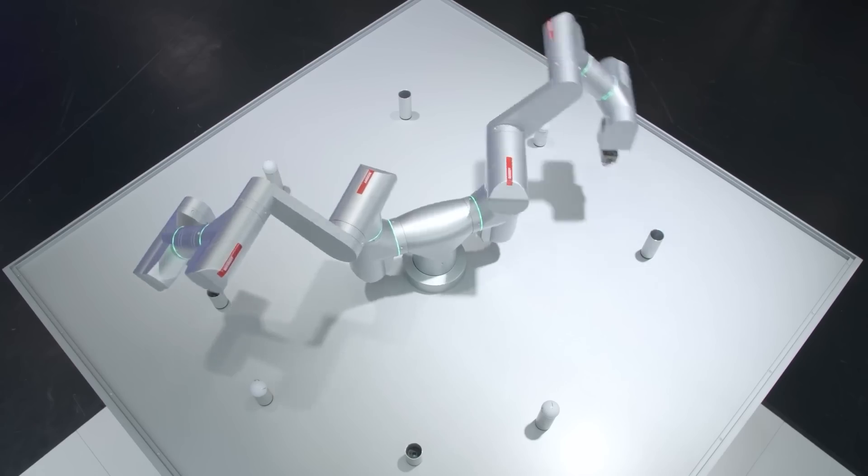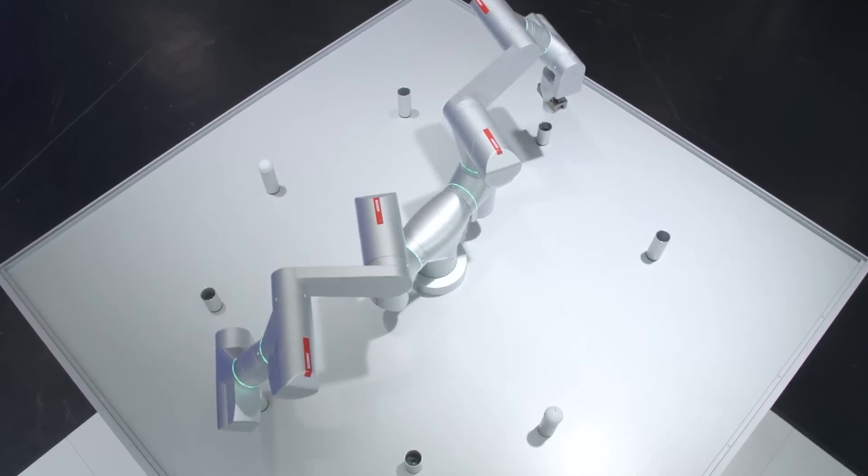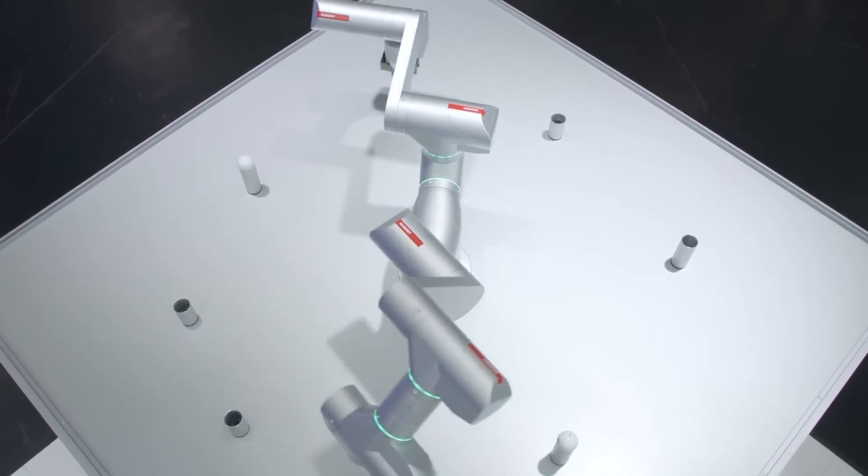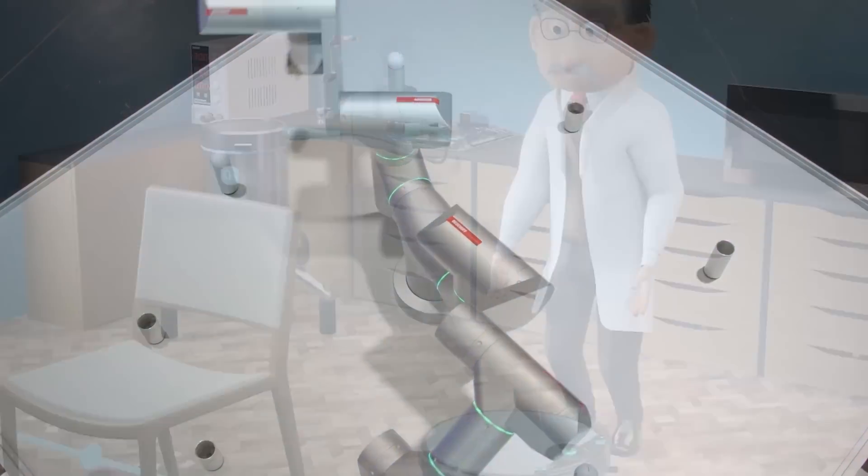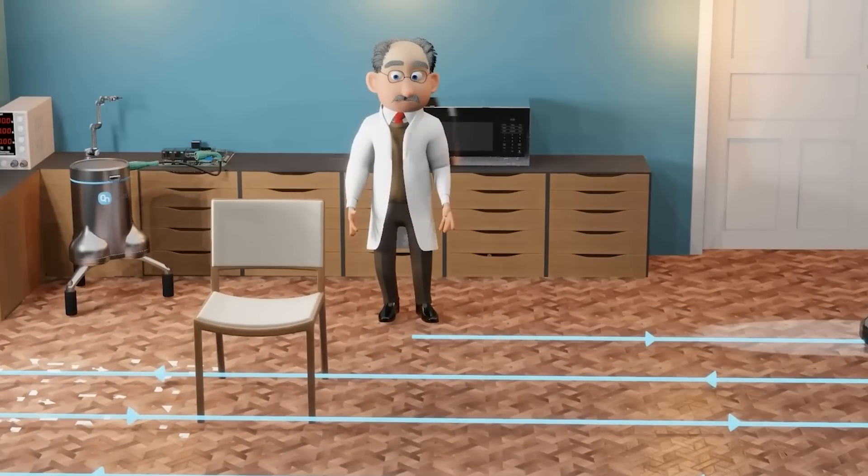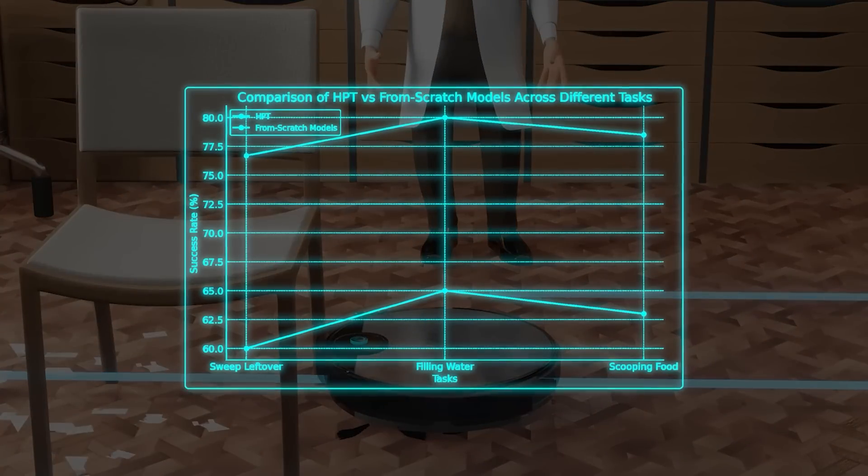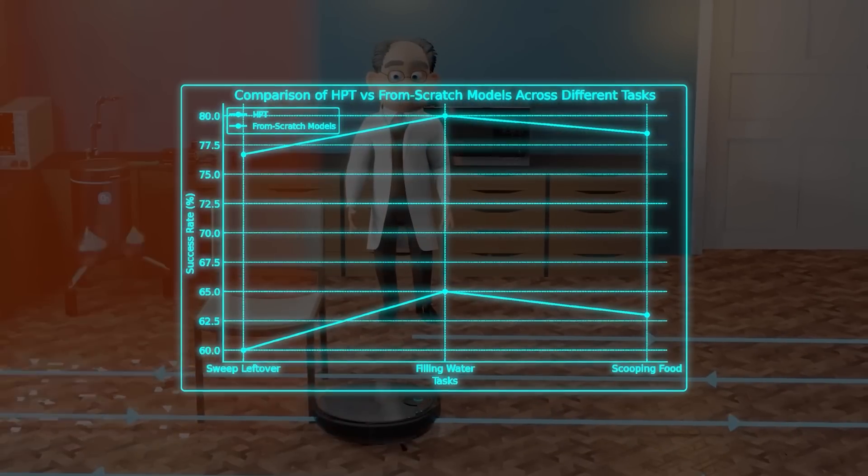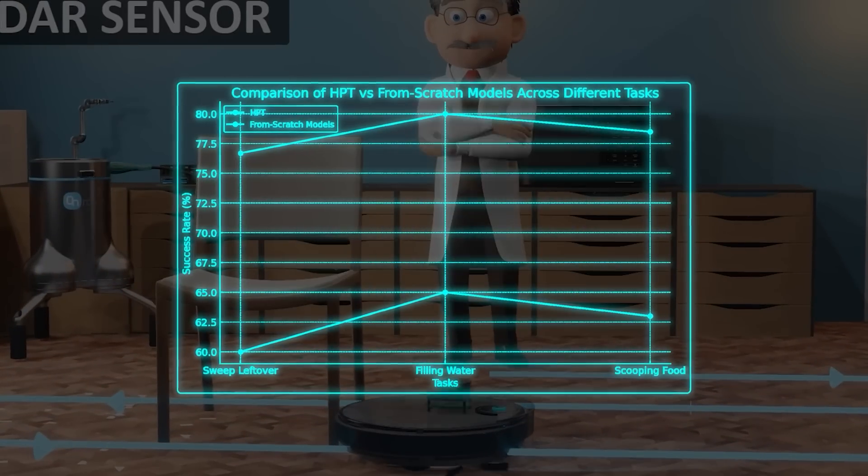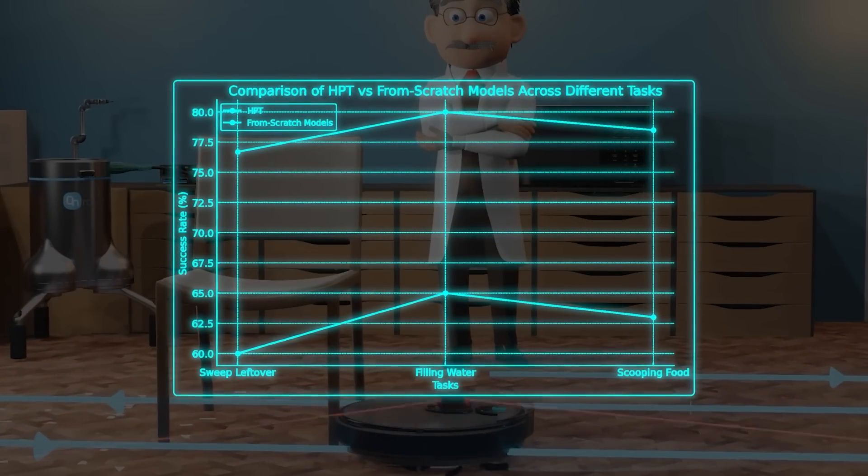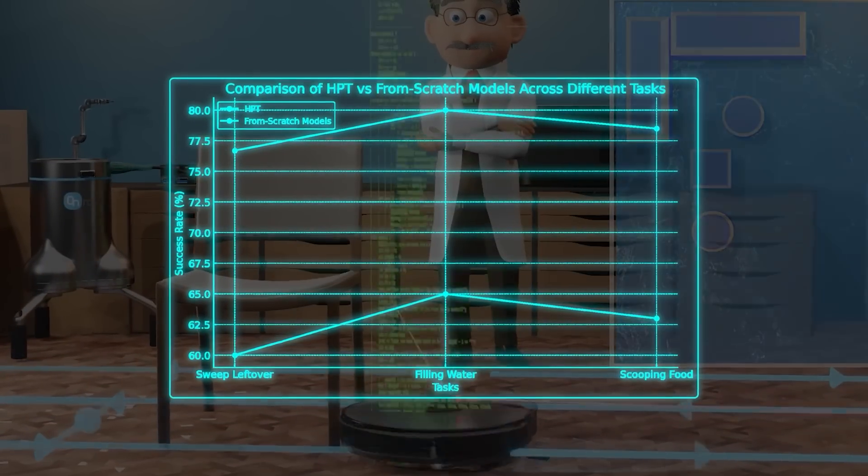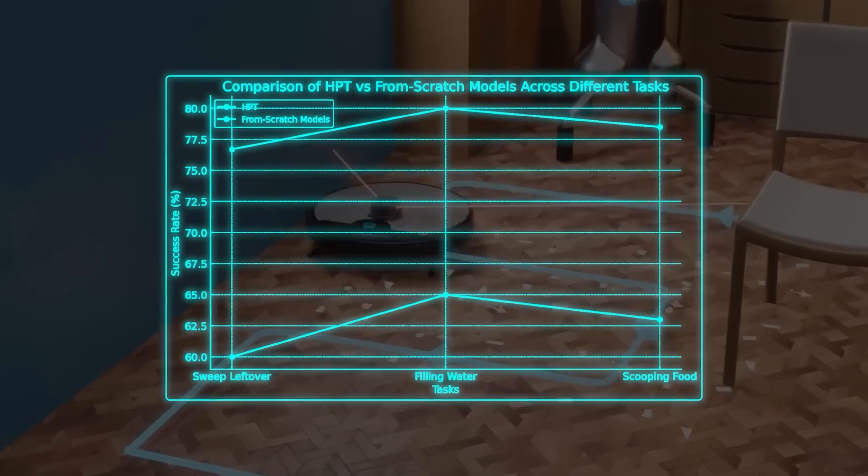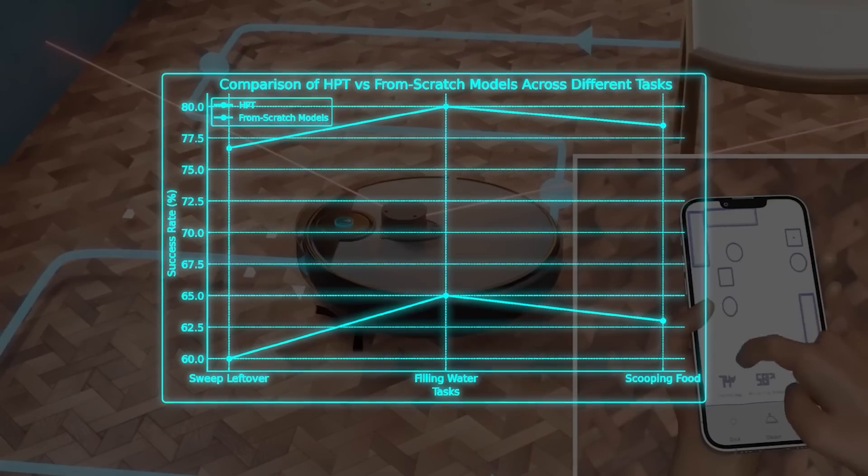When they transferred HPT to new robots and new tasks, they found that it could adapt much faster than models trained from scratch. For example, in a sweep-leftover task where a robot had to clean up objects, HPT achieved a success rate of 76.7%, beating out other models. They also tested it on tasks like filling water and scooping food, and HPT consistently outperformed the from-scratch models by a wide margin.